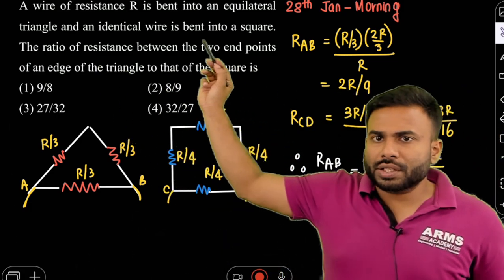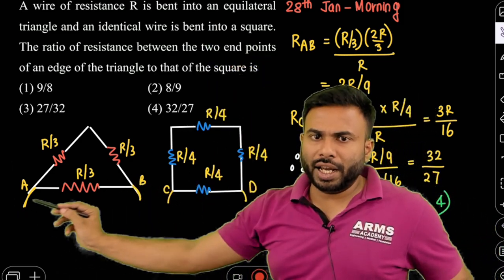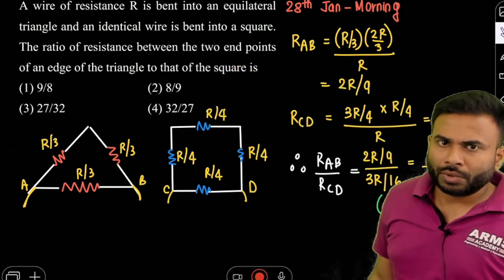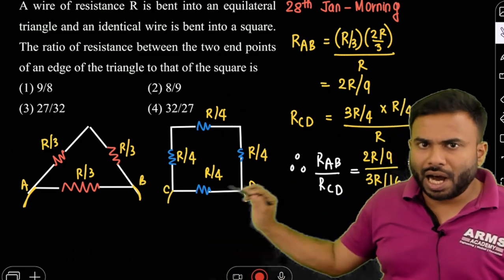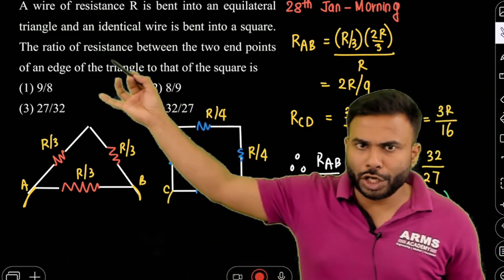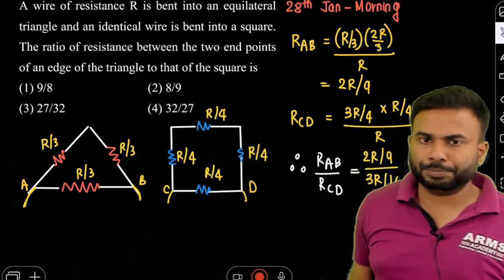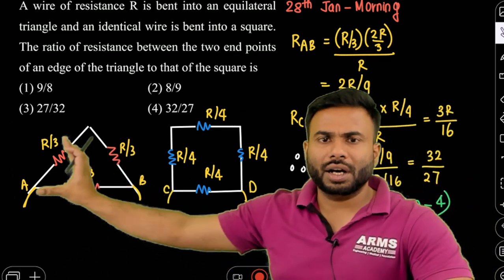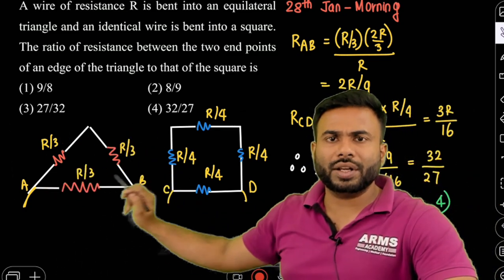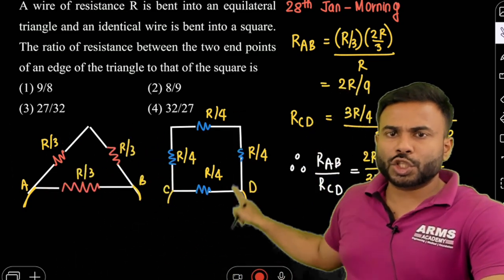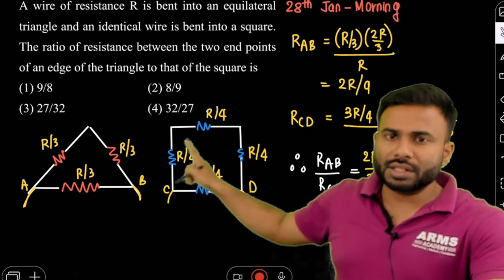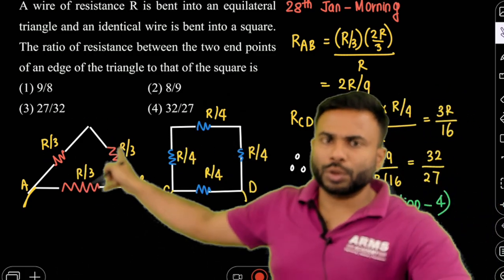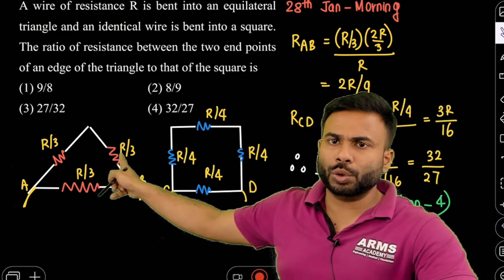The ratio of resistance between two endpoints: let's say endpoint A and endpoint C and D. Here is R_equivalent for the triangle and R_equivalent for the square. There are four options. For the equilateral triangle, each side has resistance R/3, R/3, R/3. For the square, each side has resistance R/4, R/4, R/4, R/4. Two sides are the same, so the total is equal to R/3.